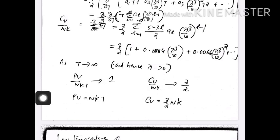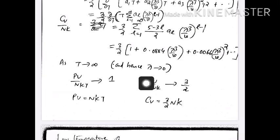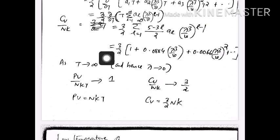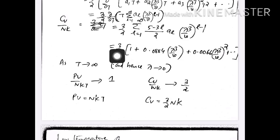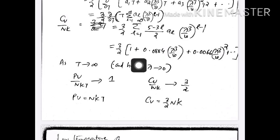As T tends to infinity, we are considering the case T → ∞. As T → ∞, λ tends to 0 because λ has temperature in the denominator. So λ → 0, and the series reduces so that C_V/Nk approaches 3/2.